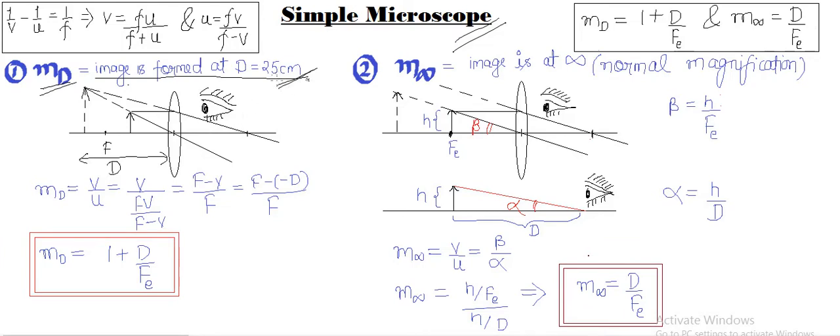The least distance at which our eye can see clearly is 25 centimeters. So the first case scenario is that if we place the object between the focus and the lens itself, the magnification can be calculated using the formula v by u. Now I want you to learn that this v by u we can convert into f minus v by f using these two formulas.